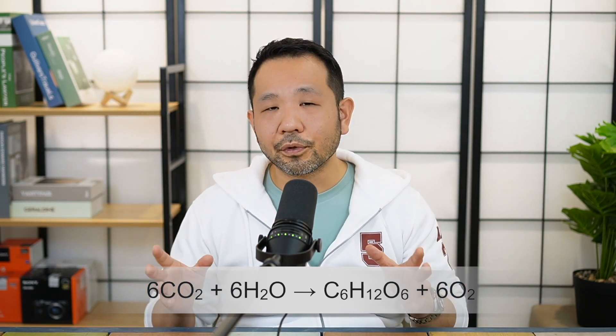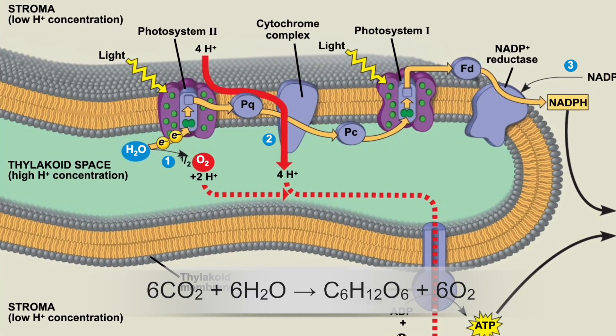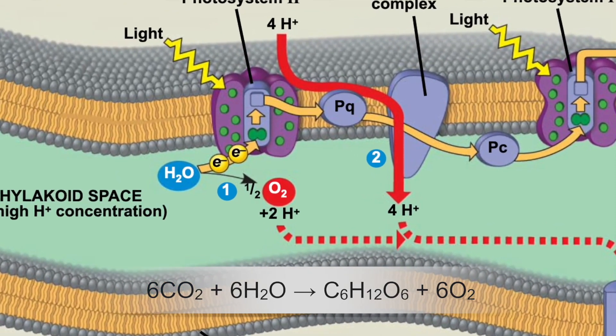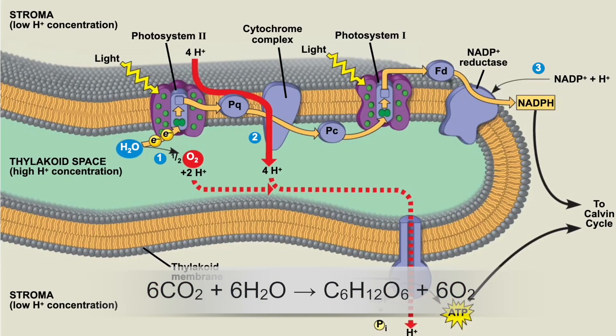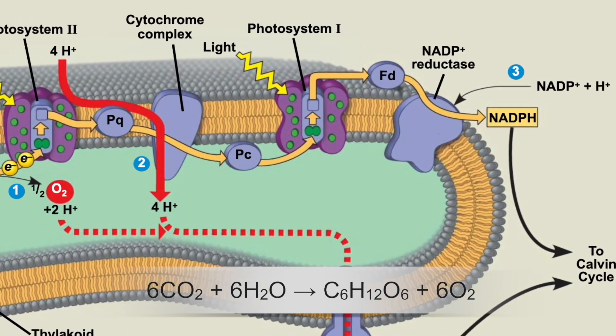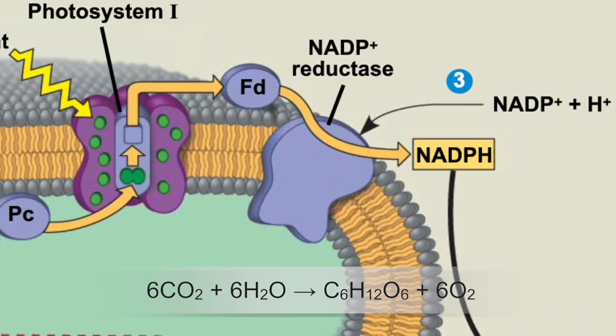During photolysis, protons are added to the thylakoid lumen, adding to the concentration differential between the lumen and the stroma. Additionally, in the stroma, NADP+ combines with H+ to form NADPH, which further reduces the proton concentration in the stroma. So all of the things happening during the light reaction work in concert to magnify that concentration difference between the thylakoid space and the stroma, allowing a lot of ATP to be produced.